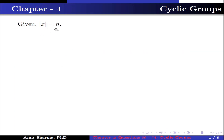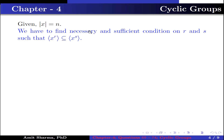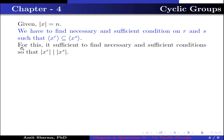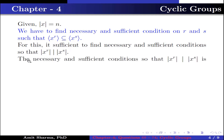Given order of x is n, we have to find necessary and sufficient condition on r and s such that the group generated by x^r is contained in the group generated by x^s. For this, it is sufficient to find the condition so that the order of x^r divides the order of x^s. The necessary and sufficient condition is that gcd(n, s) divides gcd(n, r).